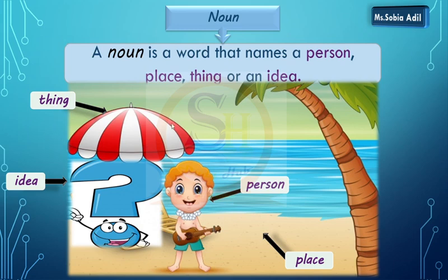For example, this person has a name — that is called boy. This one's place, yahaan pe jo jaga hai, there is actually a beach. So beach is a noun. Ideas can be qualities or inner feelings. Hum unko bhi name dete hain, like happiness, pain, sadness. So ideas ko hum proper name dete hain — those are called nouns.